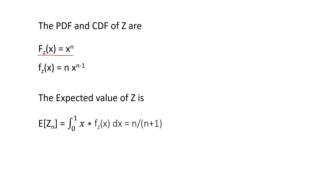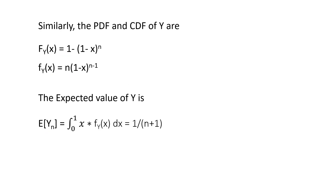The PDF of z is n·x^(n−1), and using E[Z] = ∫x·f(x)dx from 0 to 1, we get E[Z_n] = n/(n+1). Similarly, the CDF of y (the minimum) is 1 − (1−x)^n, the PDF is n·(1−x)^(n−1), and the expected value E[Y_n] = 1/(n+1).